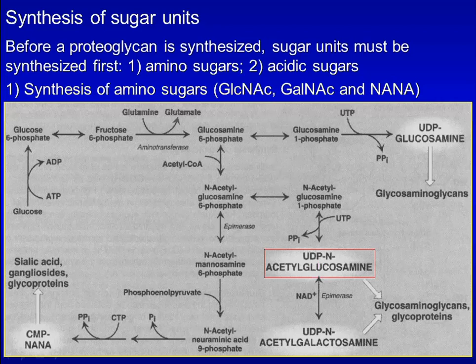These two steps follow a pathway similar to that for UDP-glucose synthesis described in the glycogen synthesis lecture. An epimerization reaction leads to UDP-N-acetylgalactosamine.